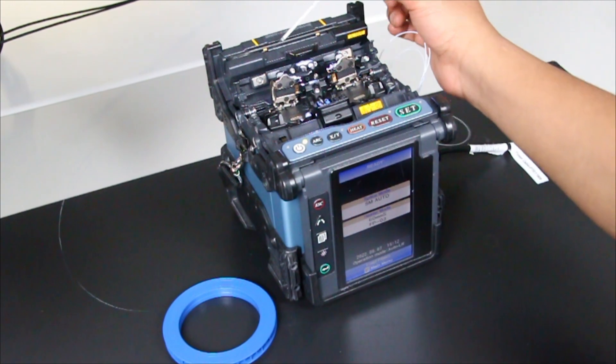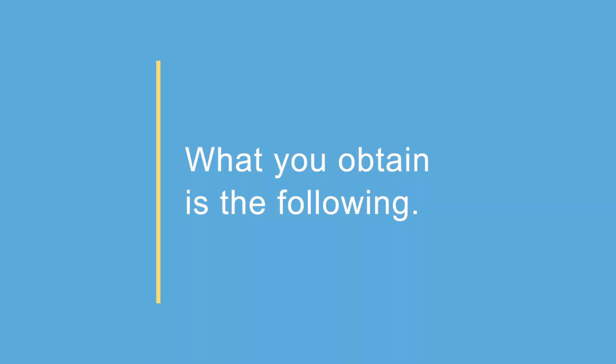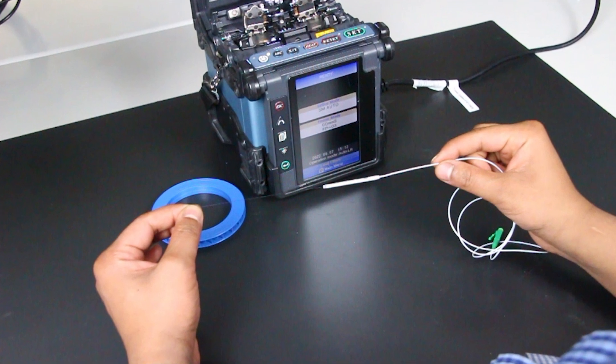Remove the fiber from the heater. What you obtain is the following: a fully spliced fiber ready for use.